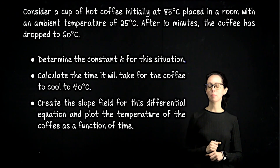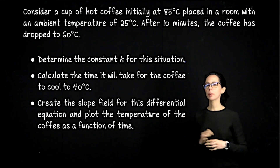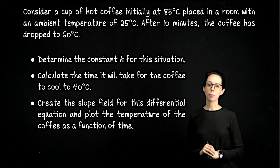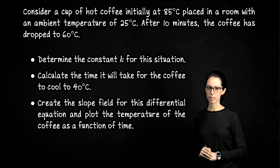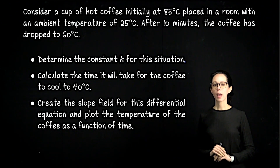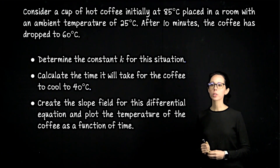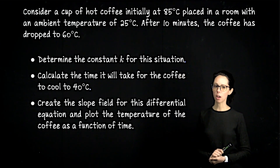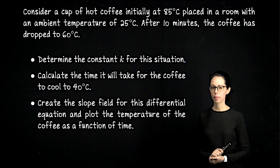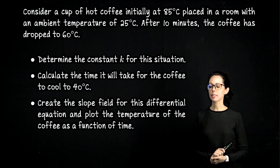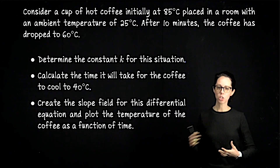We are going to do one example in this lesson because the equation is the same whether you're heating up or cooling down. We're looking at the example of cooling. Suppose I have a cup of coffee at 85 degrees Celsius in a kitchen at 25 degrees Celsius. I don't drink the coffee — I let 10 minutes go by, and after 10 minutes the coffee has cooled down to 60 degrees Celsius. Given this information, we will work out the constant of proportionality k, and then figure out how long it takes for the coffee to cool down to 40 degrees Celsius.